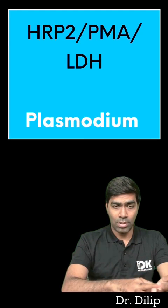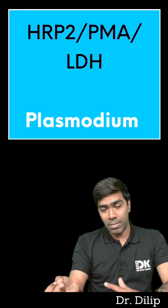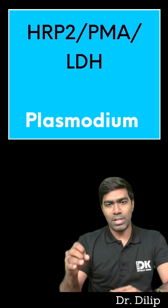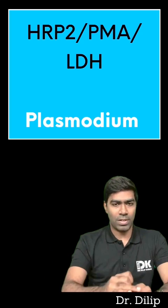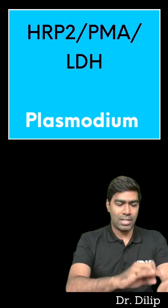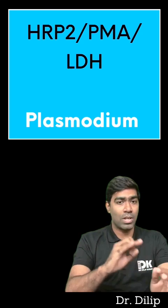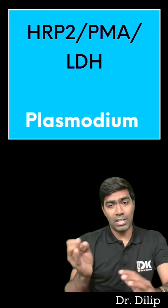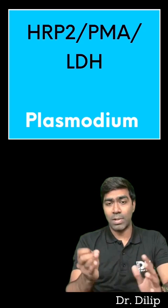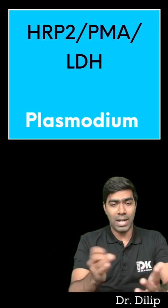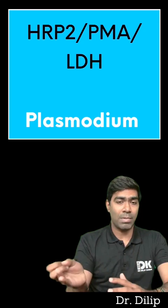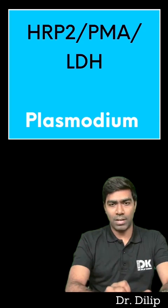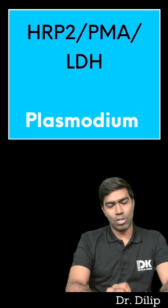Number 2: HRP2, PMA (that is panmalarial antigen), and LDH are going to help us diagnose plasmodium infections. HRP2 is going to help us diagnose Plasmodium falciparum infections and LDH for Plasmodium vivax infections. But panmalarial antigen, that is nothing but malarial aldolase, is going to help us diagnose any malarial infection across species.